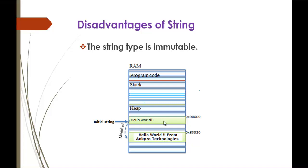It means that we already have a memory space for 'Hello World', but when you want to alter it to 'Hello World from Angpro Technologies', since it cannot alter at the same memory space, what it does instead is create a new string object on the memory heap. This is the major disadvantage of string — altering a string will not reuse the same memory space; instead it creates a new object and assigns the value there.